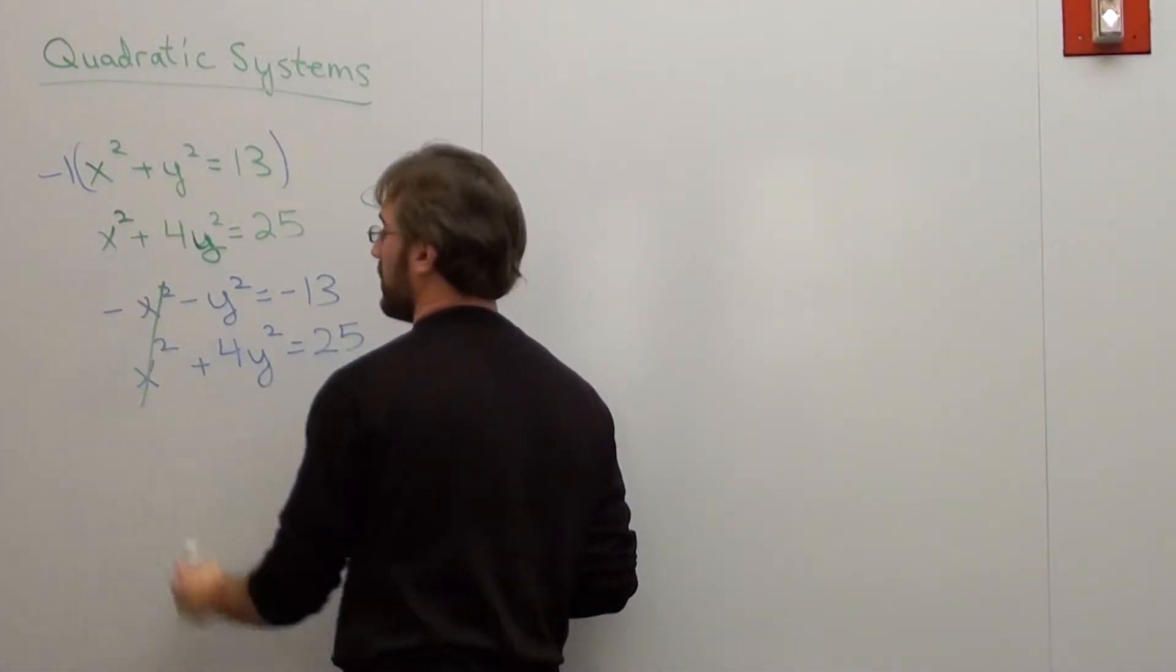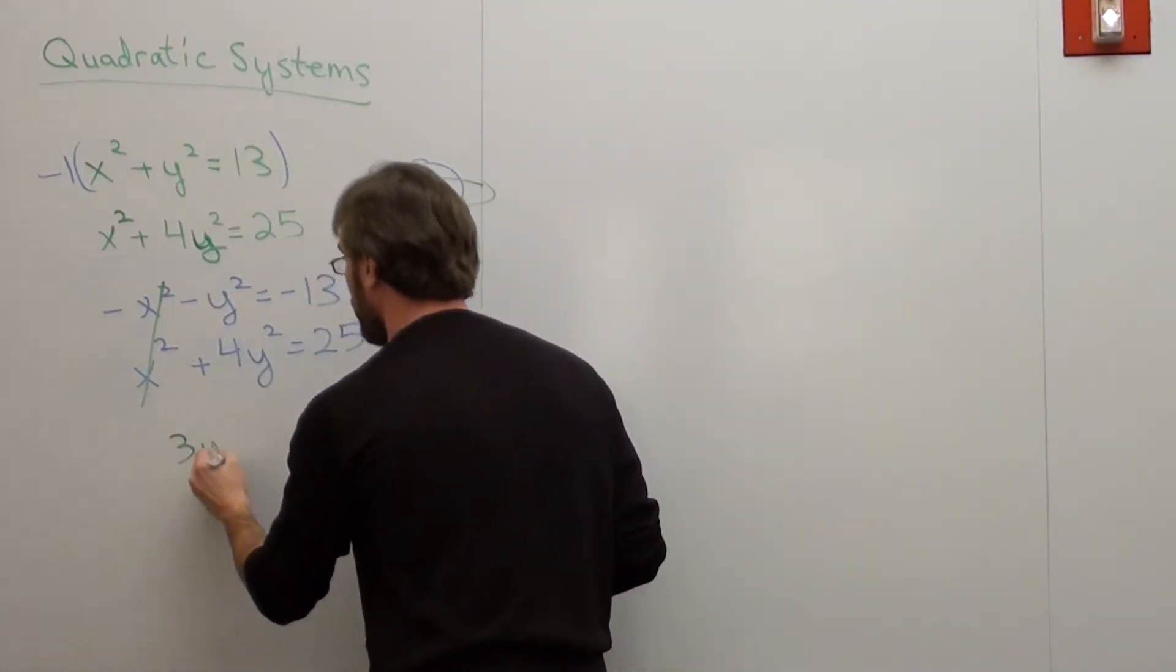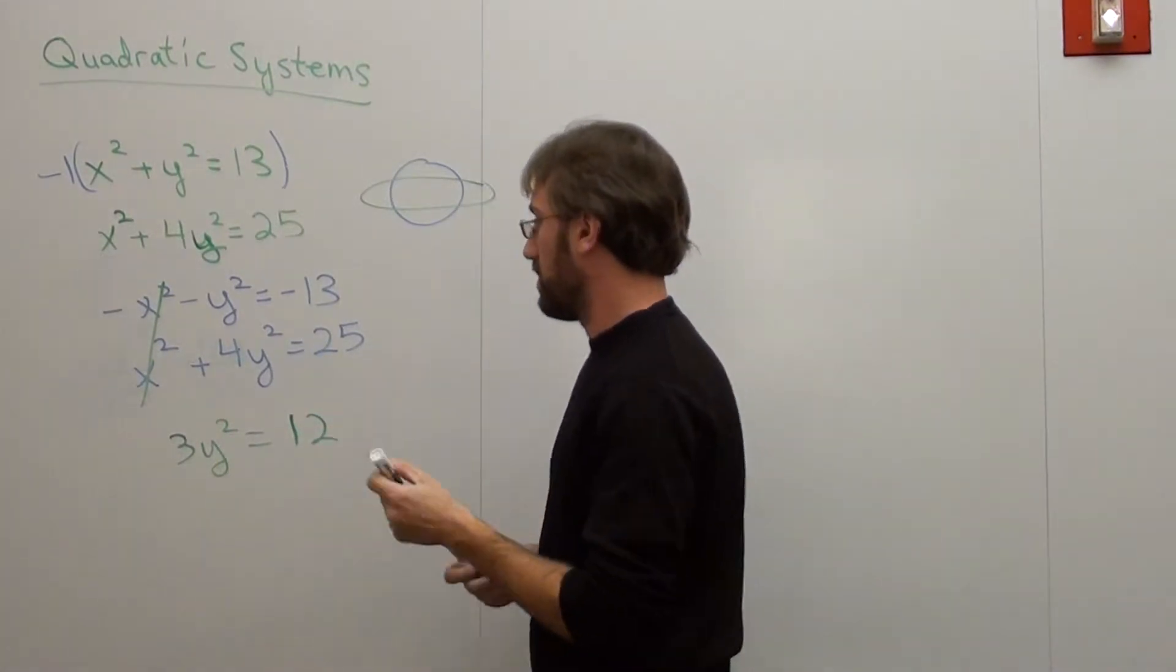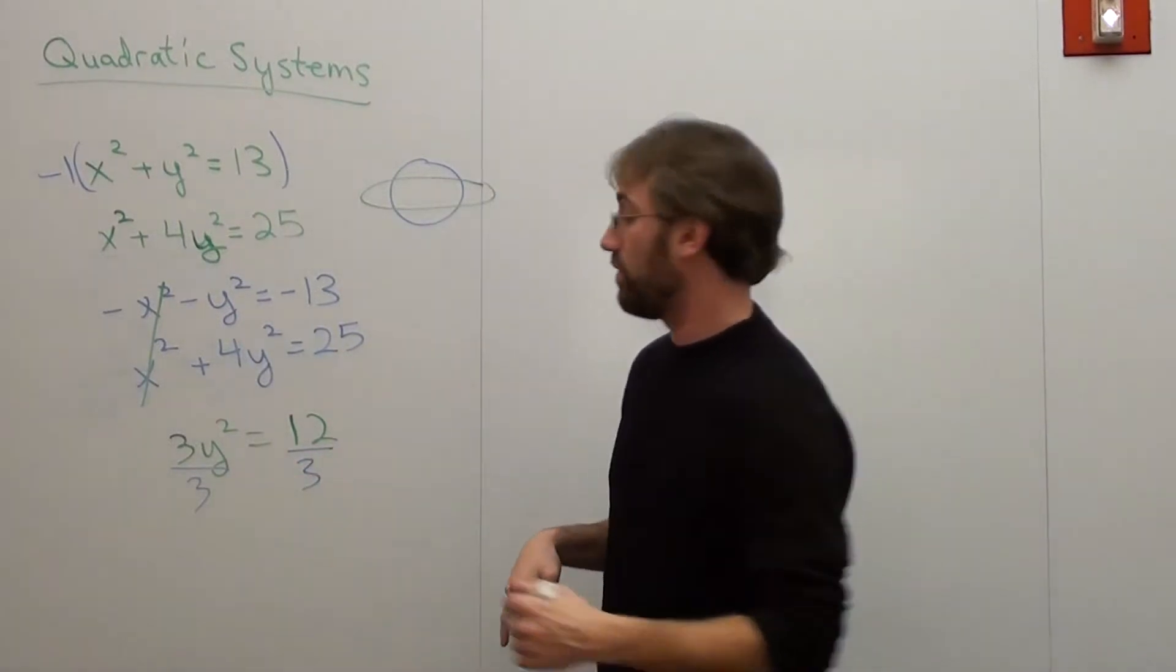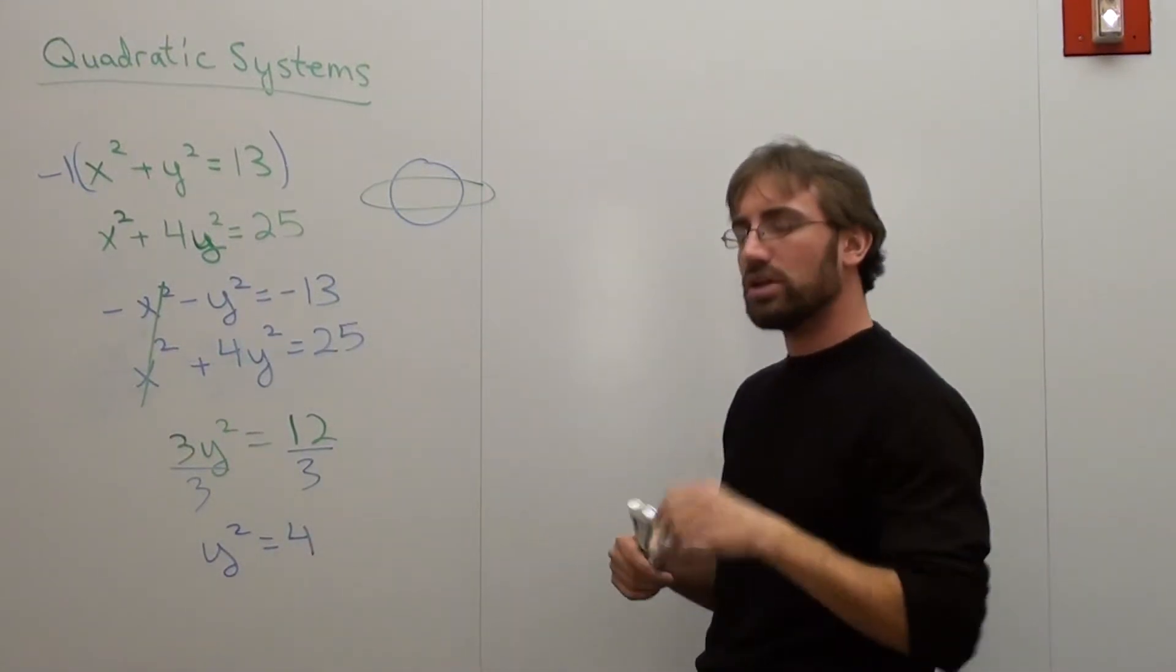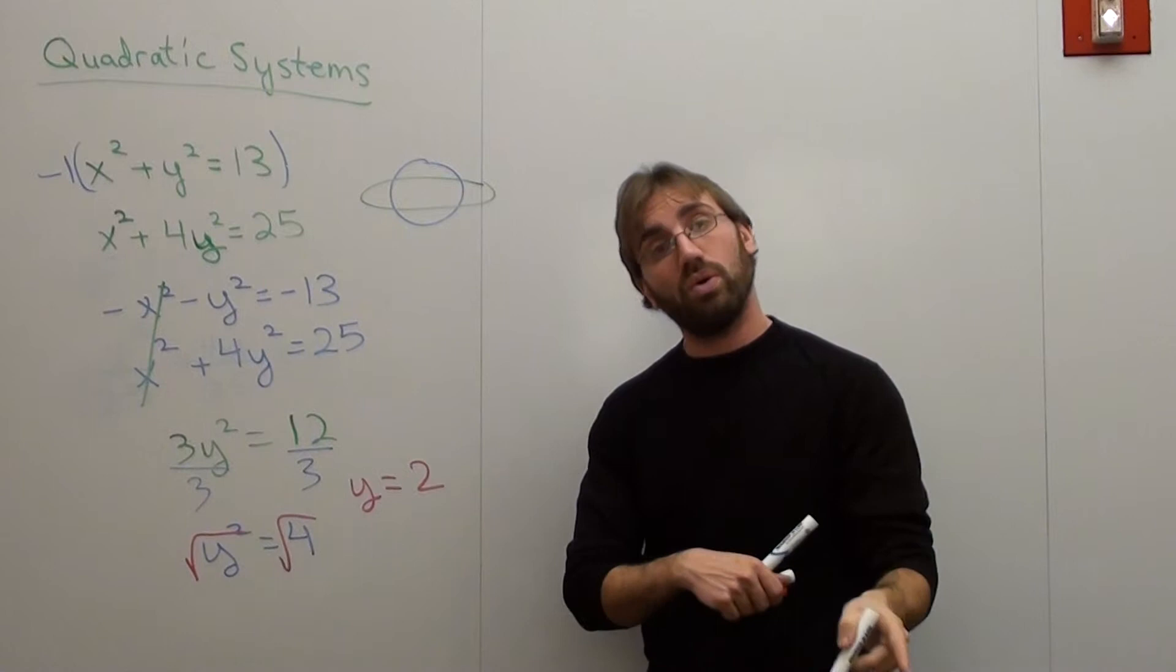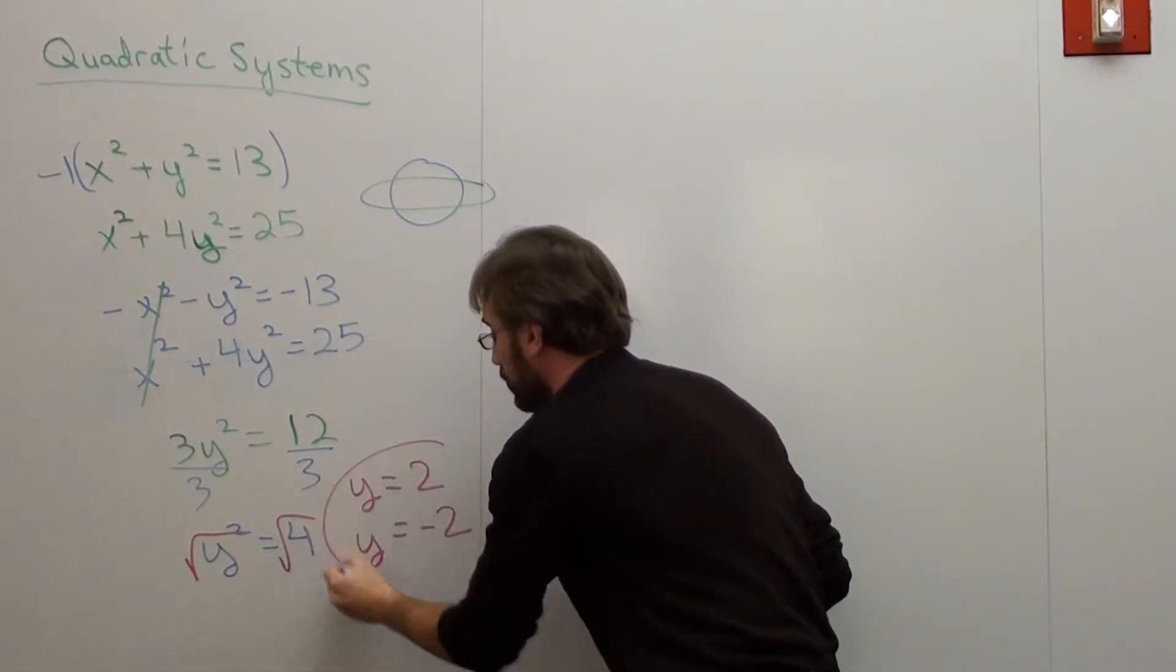X squared and x squared cancel out. Negative 1y squared plus 4y squared is 3y squared. And negative 13 plus 25 is 12. Divide by 3. Y squared equals 4. Take the square root of both sides. Y can equal 2 or y can equal negative 2. Those are my two values for y.